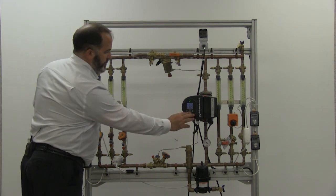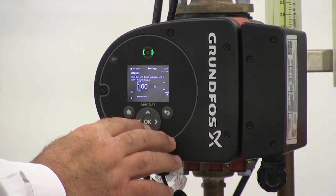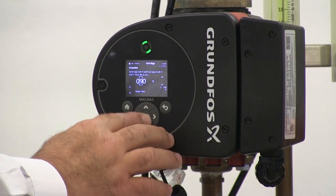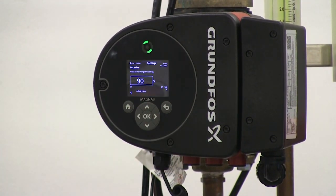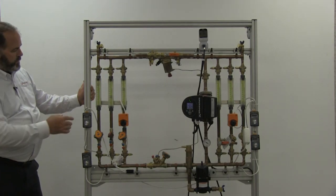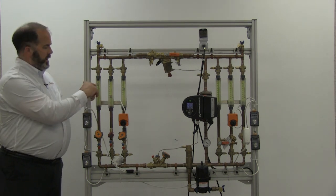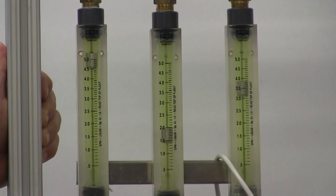So in this case I'm going to ramp my pump down. And about 90% should about get us there. So now you can see I'm at my design flow for my index coil, but I'm still overflowing on my two other coils.